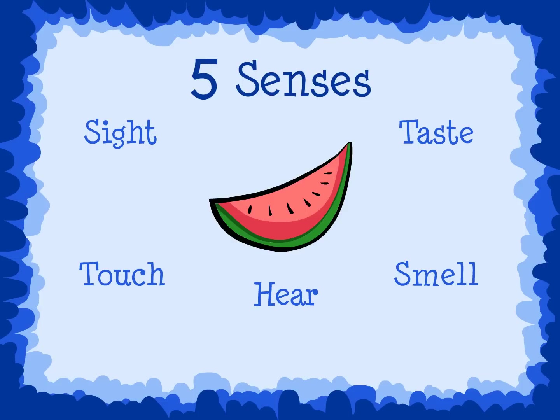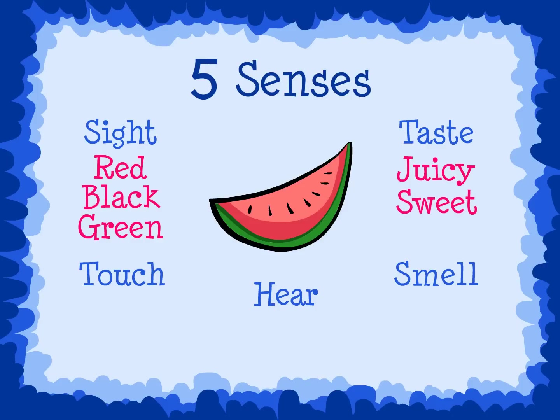When I use my sense of sight, I can see the red, black, and green on the watermelon. When I use my sense of taste, I can taste the juicy sweet watermelon. When I use my sense of touch, I can feel the wet and smooth watermelon. When I use my sense of smell, I can smell the sweet watermelon.